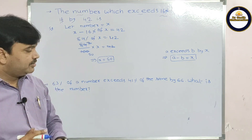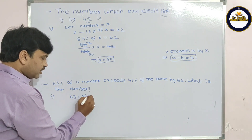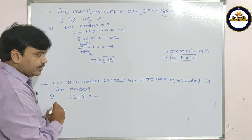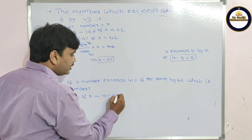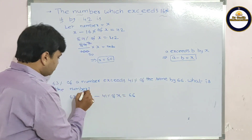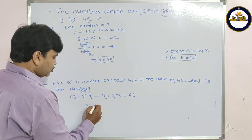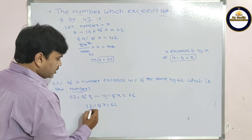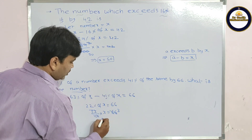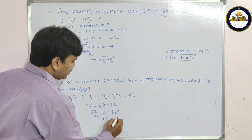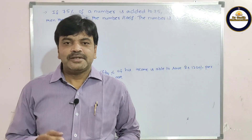Let us see the same model. 63% of a number exceeds 41% of the same number by 66. What is the number? Solution: let the number be x. So 63% of x minus 41% of x equals 66. That gives 22% of x equals 66, meaning 22 by 100 into x equals 66. Since 22 goes into 66 three times, x equals 3 into 100, so x equals 300.